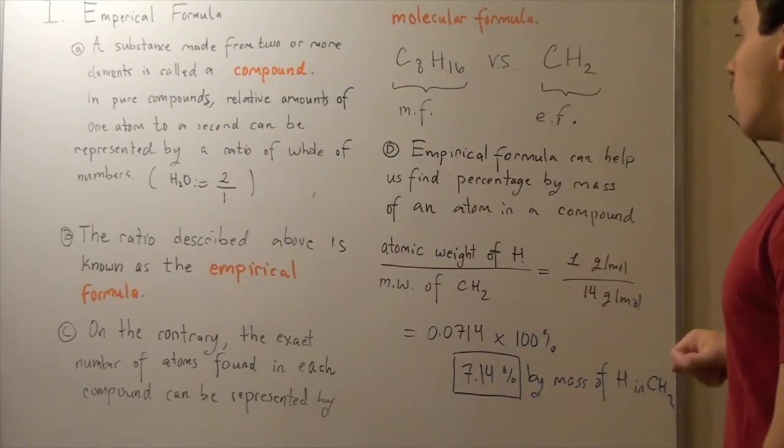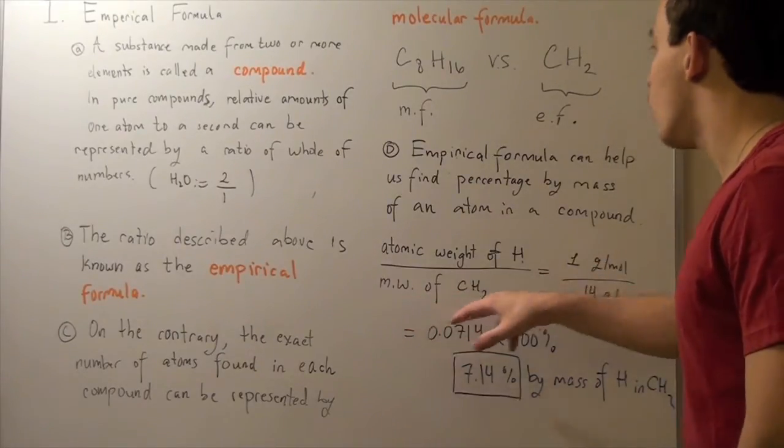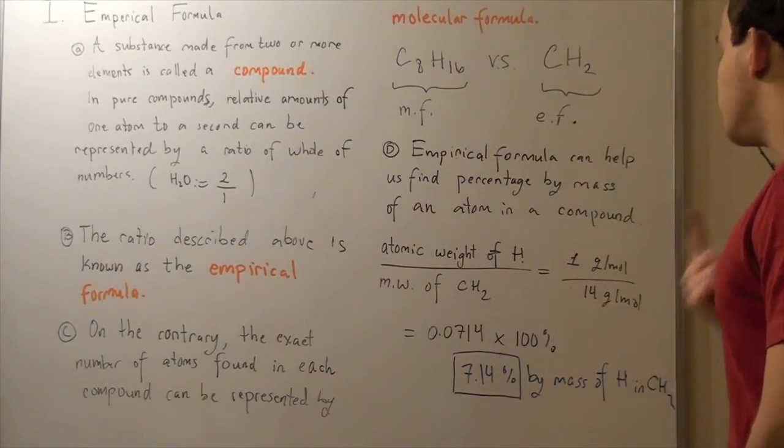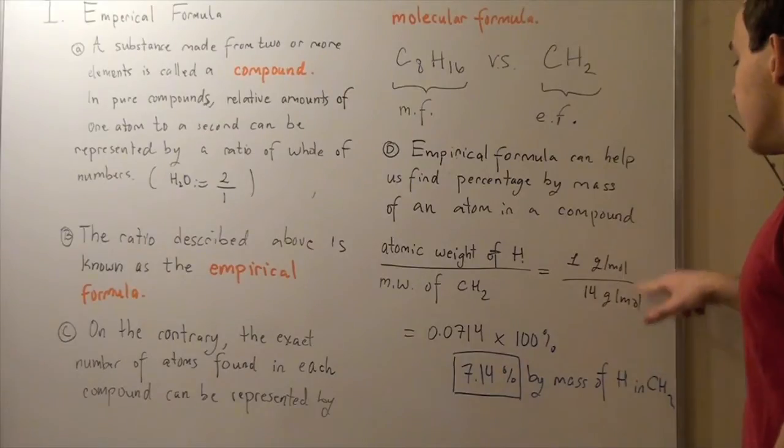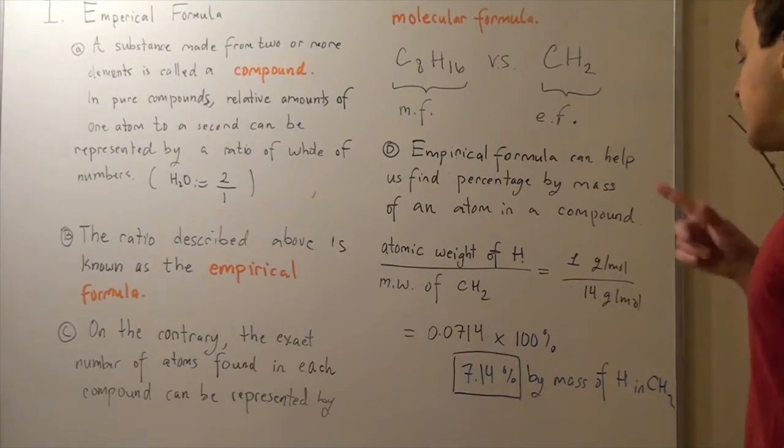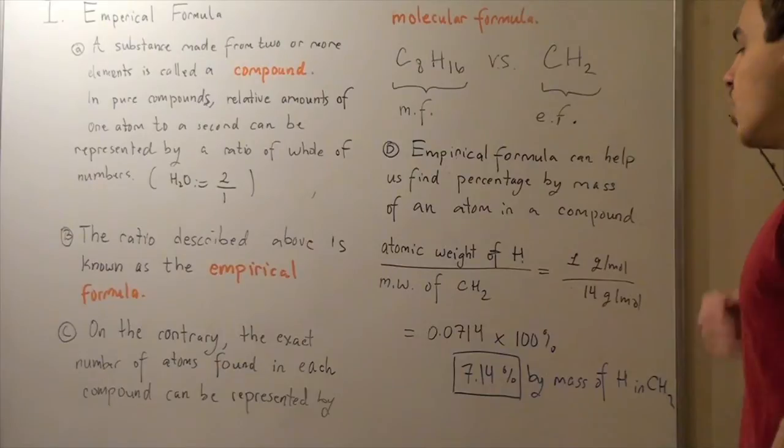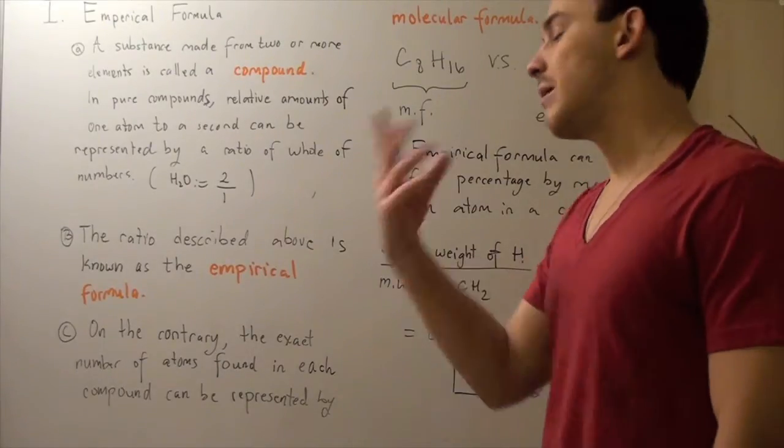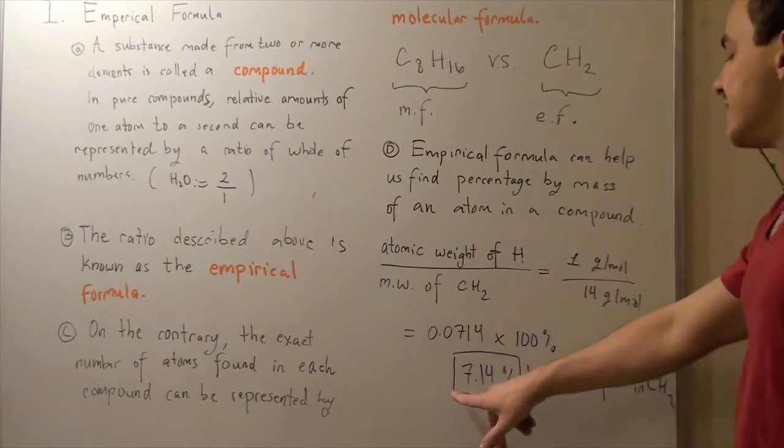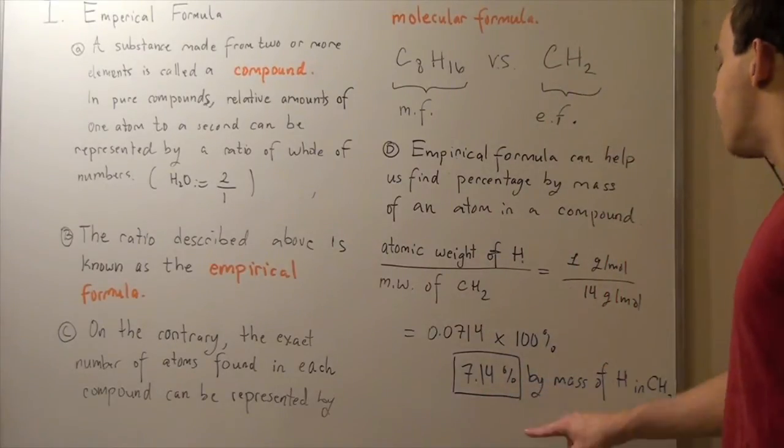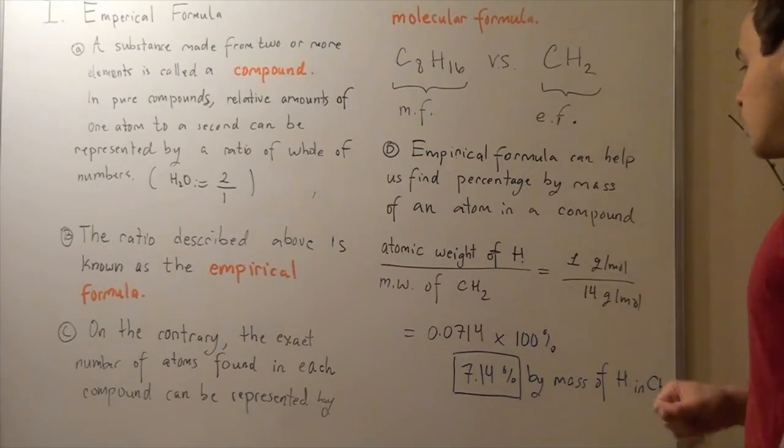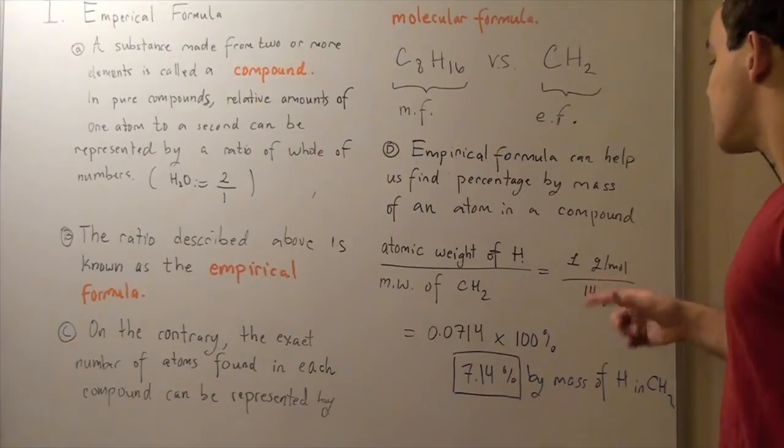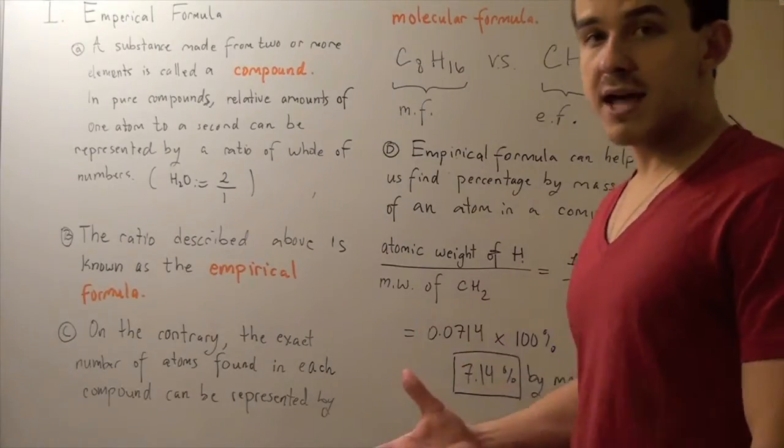Well what we do is we take our atomic weight of our H, which is one gram per mole, and divide that by our molecular weight of this guy, or the empirical weight of this guy. And what we get is 14 grams per mole. These units cancel, and we get 1 over 14, which is 0.0714. Now to get the percent, we multiply it by 100, and we get 7.14% by mass of H in CH2. So in this compound, our H takes up 7.14% by mass.